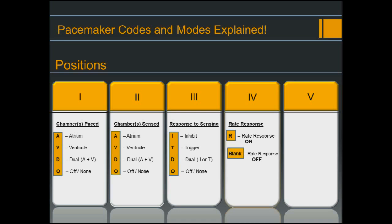The fourth position represents rate response or rate adaptive pacing. This position is represented by the letter R if rate response is on, and is typically left blank if rate response is turned off. The fifth position represents multi-site pacing, but it really isn't used, so we won't be discussing it further in this presentation.